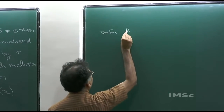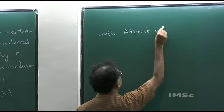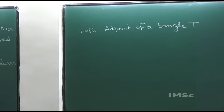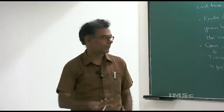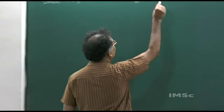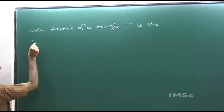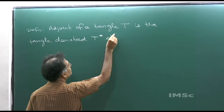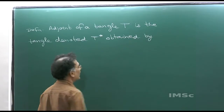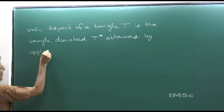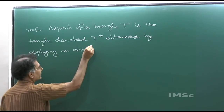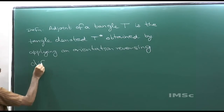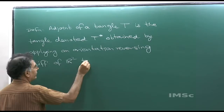Definition: I am defining the adjoint of a tangle. This has nothing to do with planar algebras as such — first we deal with just tangles, which are just pictures in the plane. The adjoint of a tangle T is the tangle denoted T-star, obtained by applying an orientation-reversing diffeomorphism of R² to T and all its data.